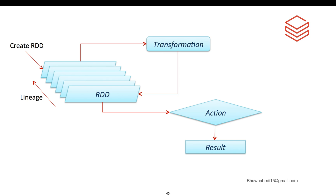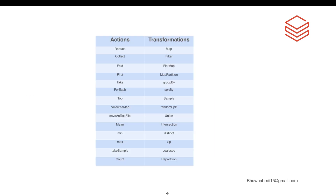Here are some of the transformations and actions. Actions include collect, take, collect as map, min, max, mean, count, and display. Collect will take the data from all the executor nodes and bring it to the driver node to show it to you. Take will give you sample rows. Transformations include map, filter, flat map, group by, union, intersection, and zip. You need to practice each and every transformation to understand what is exactly happening.